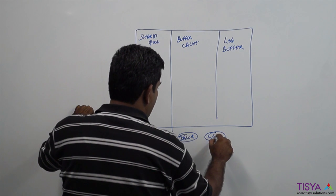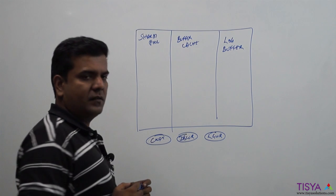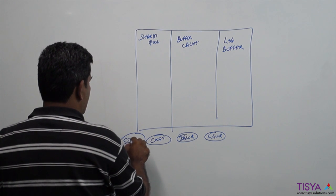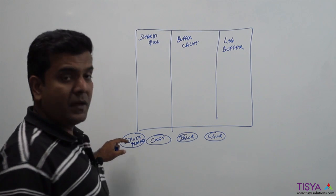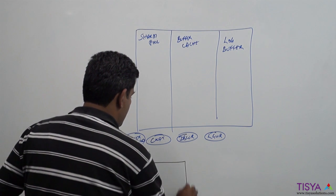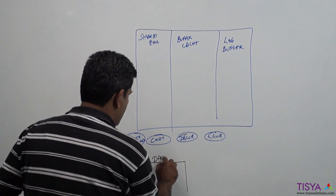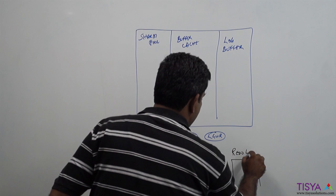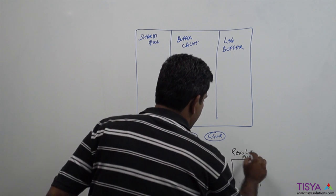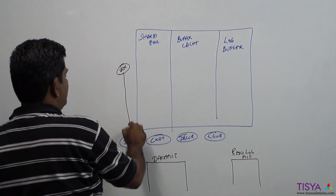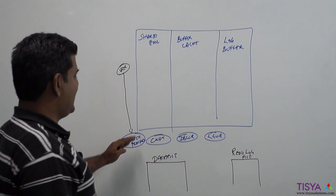We also have checkpoint, DB writer, log writer - three processes which we will use. Apart from it we have our server process which is on behalf of a user who is connected. Then we have data file and we need a log file.